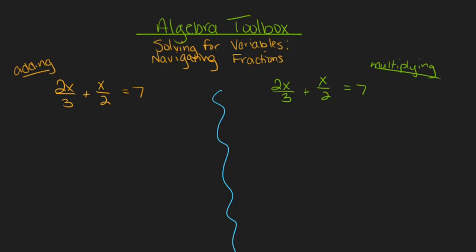The first way is that we can find a common denominator for any fractions, add them together, and then solve from there. The second way is that we can use multiplication to get rid of any denominators we may have and then solve from there.